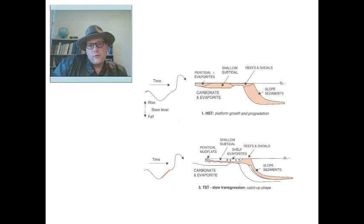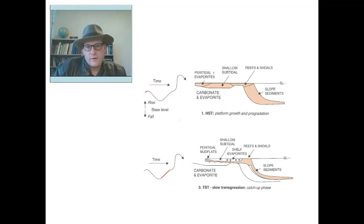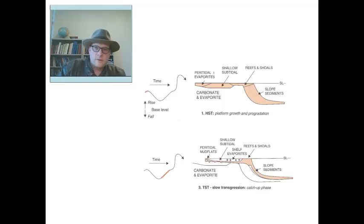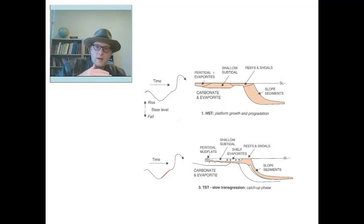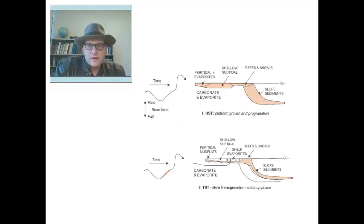If we drive up that base level change and cause a large transgression — really covering up that area — we can then trap off or cover that carbonate shelf. Saline waters come in, and as they evaporate they form an anhydrite layer. That seals off the unit and provides our petroleum seal, preventing the oil and natural gas from escaping upward.